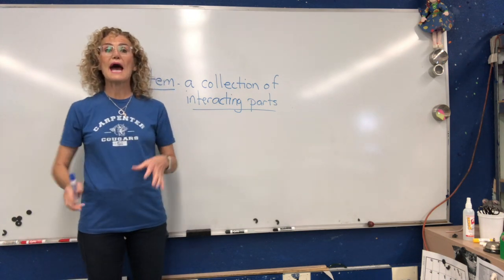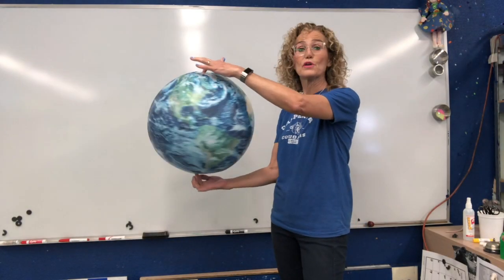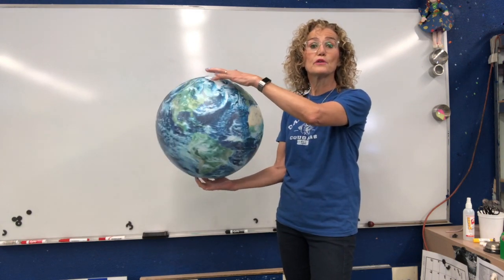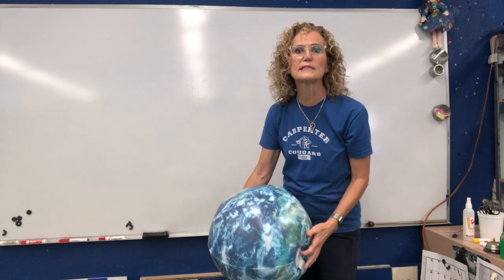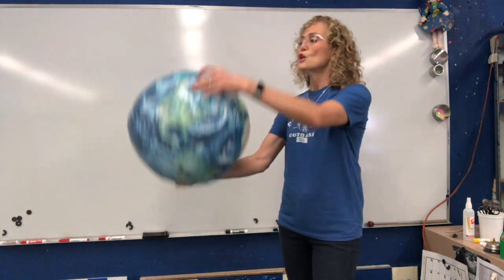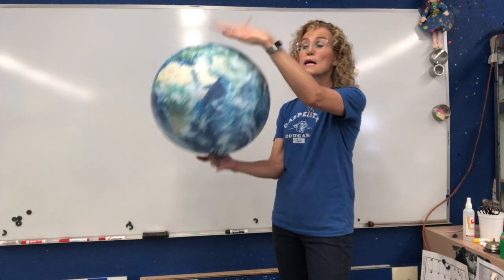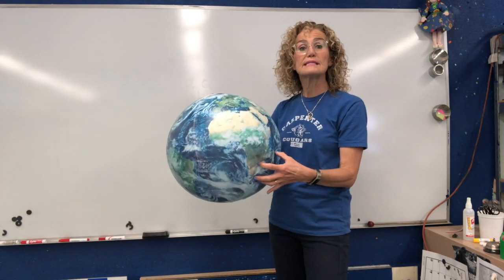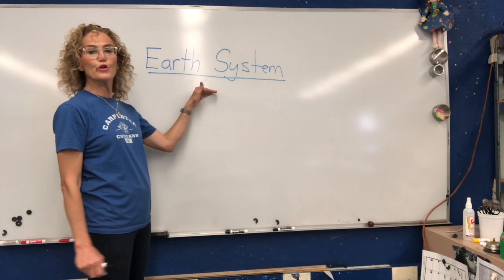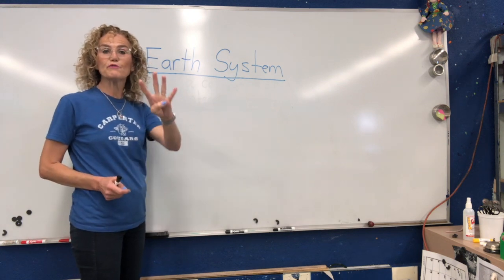We are going to start looking at Earth's systems. In our last unit, we talked about how Earth fit into the solar system — there's that word system again. The Sun, planets, meteors, comets — all these things interact with the Sun. So Earth was one part of the solar system, but the Earth itself is also a system, and the Earth system consists of four parts.